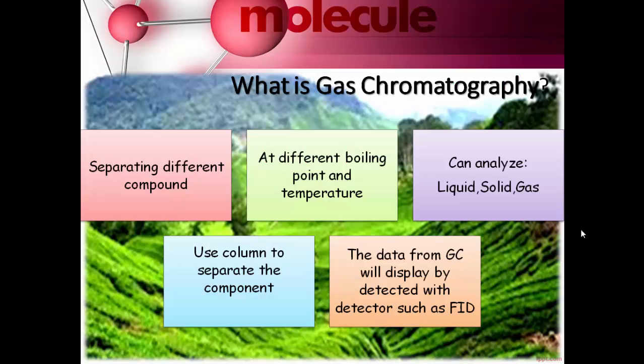To start it off, what is gas chromatography? Gas chromatography is a technique for separating and analysing a sample compound. It can analyse liquids, solids, and gases. It uses columns to separate the different components, and the data from the gas chromatography machine is collected and detected with the use of a detector. For our case, we are using the FID, which stands for Flame Ionisation Detector.